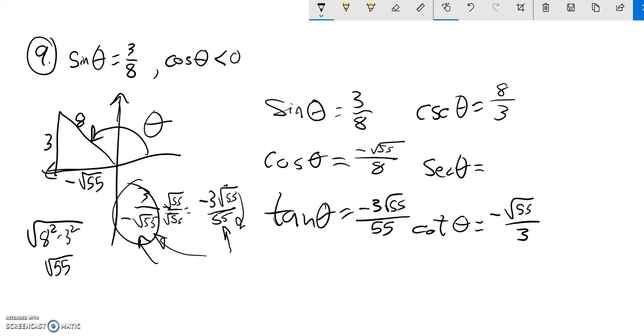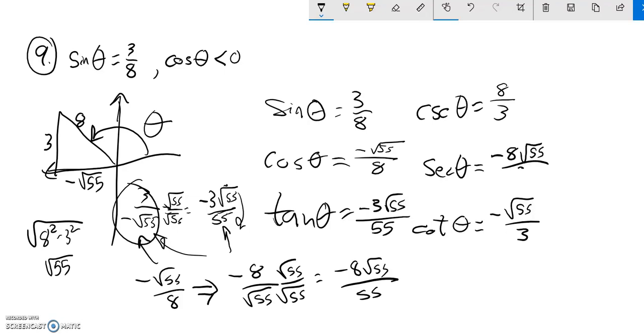And lastly, secant is the reciprocal of cosine. Cosine is negative root 55 over 8, so I take the reciprocal to get secant: negative 8 over root 55. Can't leave that radical in the denominator, so I multiply by root 55 over 55 to get negative 8 root 55 over 55.